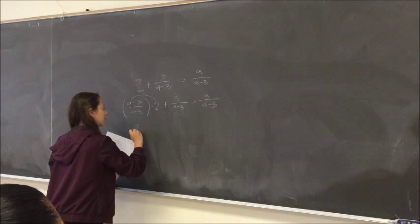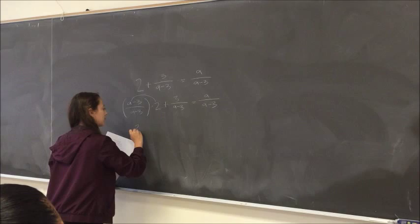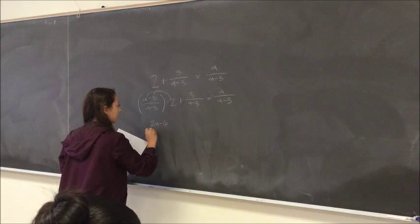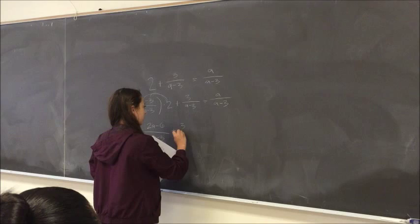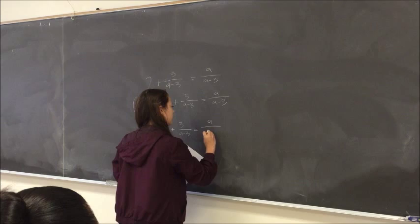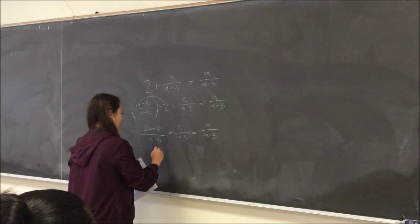And then so you do this, it would be the 2 goes over here. So it would be 2A and the 2 goes to negative 3, which would be minus 6, all over A minus 3, plus 3 over A minus 3, equals A minus 3. That's it.